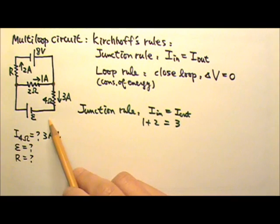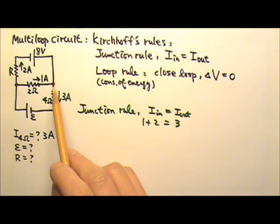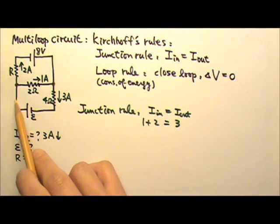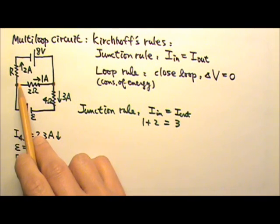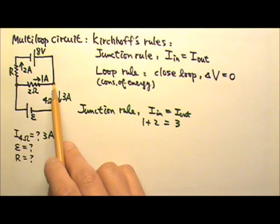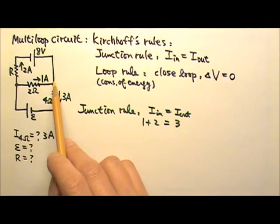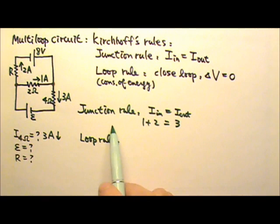Notice that in this circuit we have three different currents, because we have three segments between junction points. Three amps flow through one segment. When the current gets to the junction point, it can split or merge, so beyond the junction point the current changes. Each segment between junction points gets its own current. We have used the junction rule, so for the next two unknowns we'll have to use the loop rule.